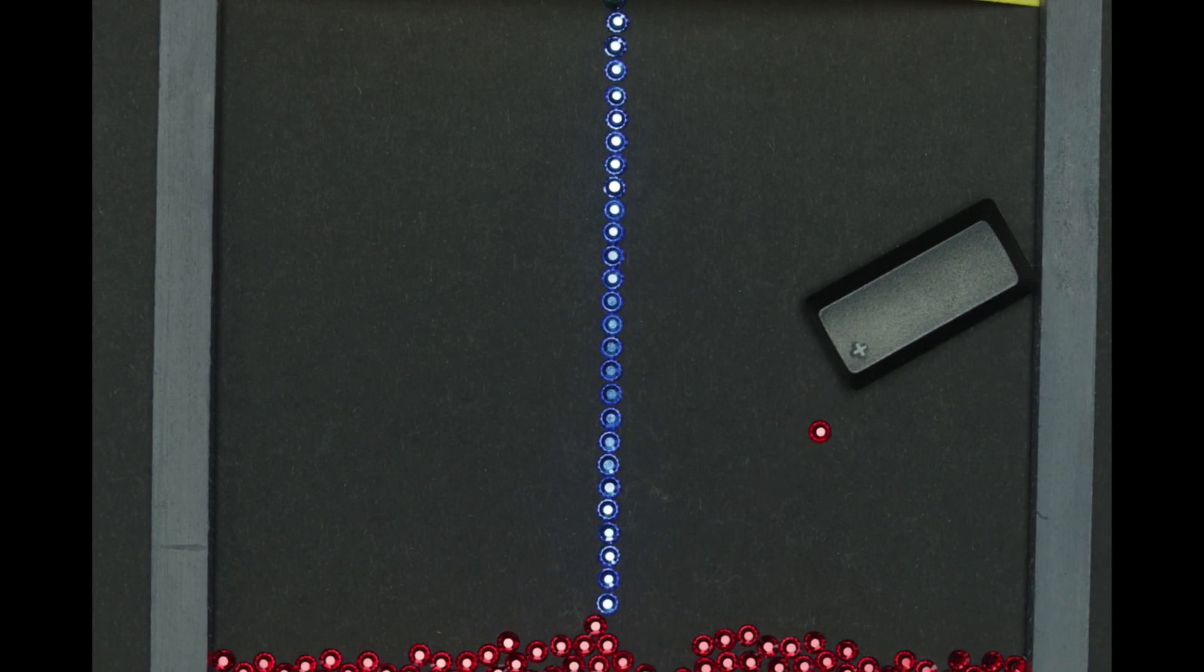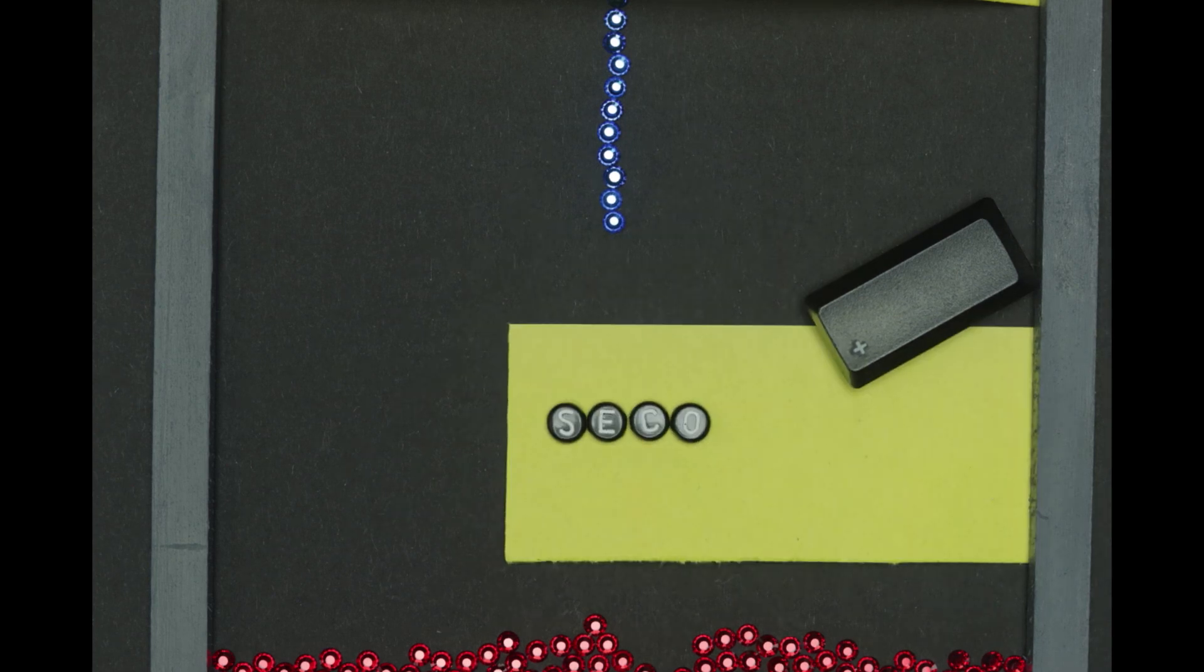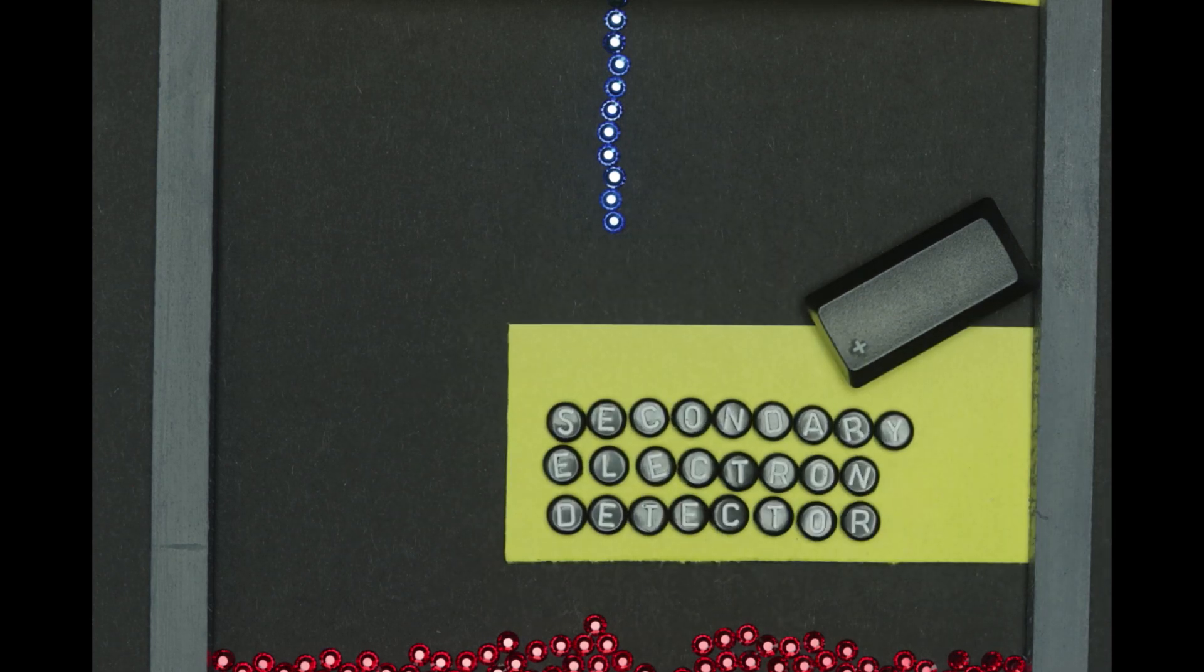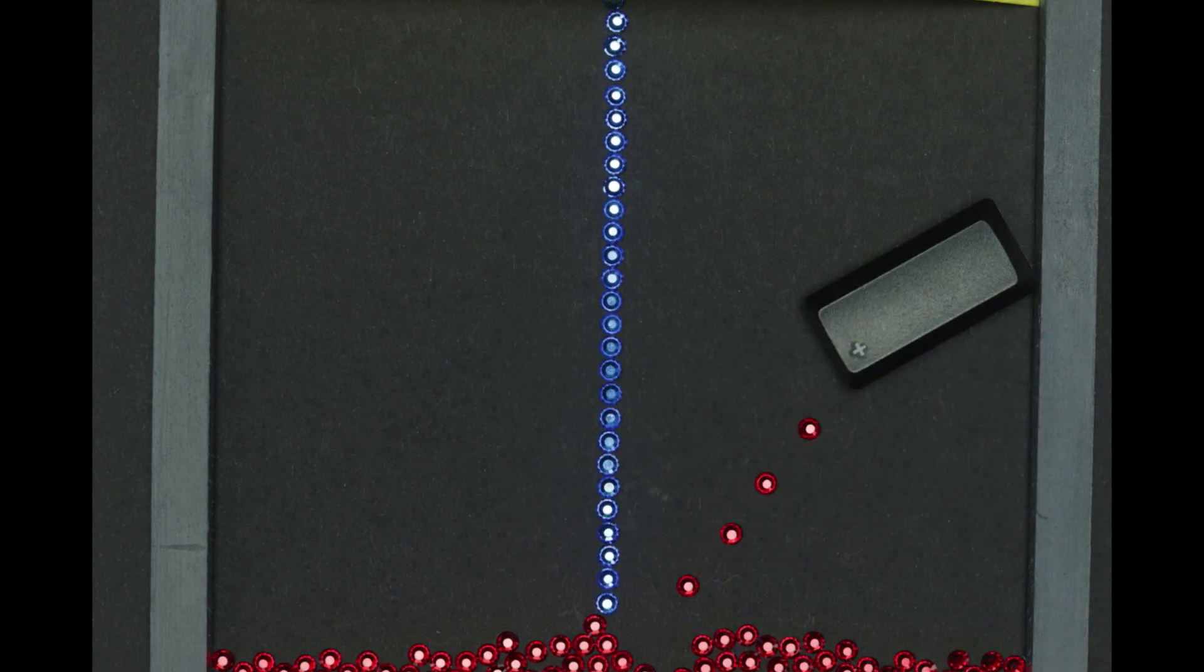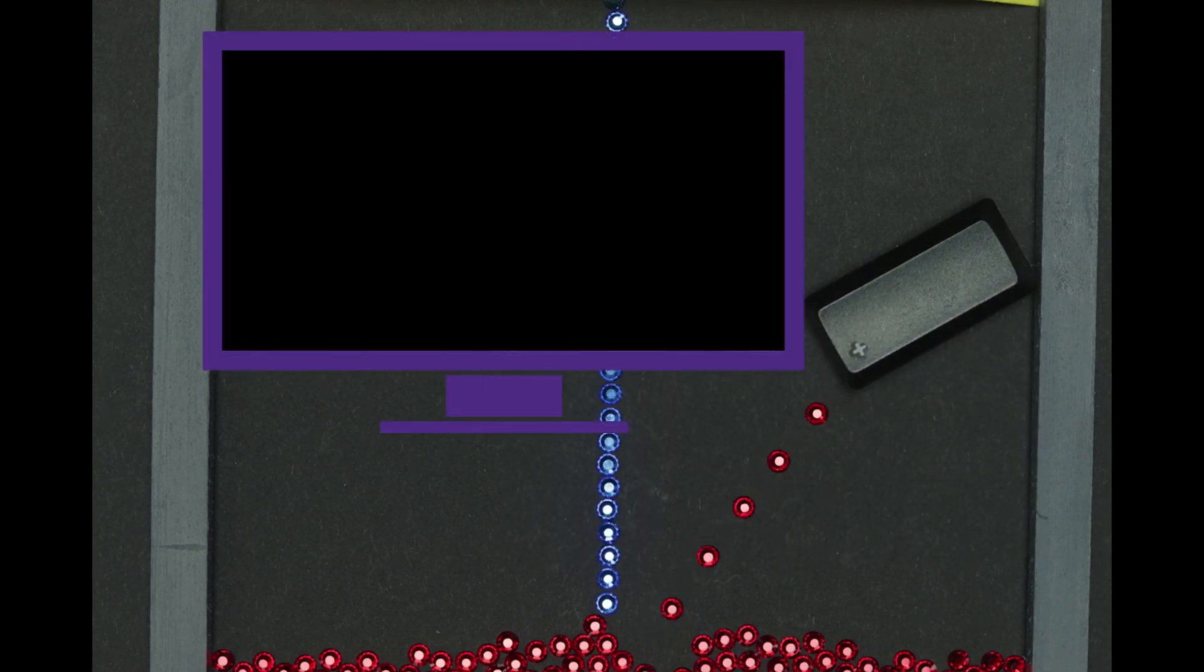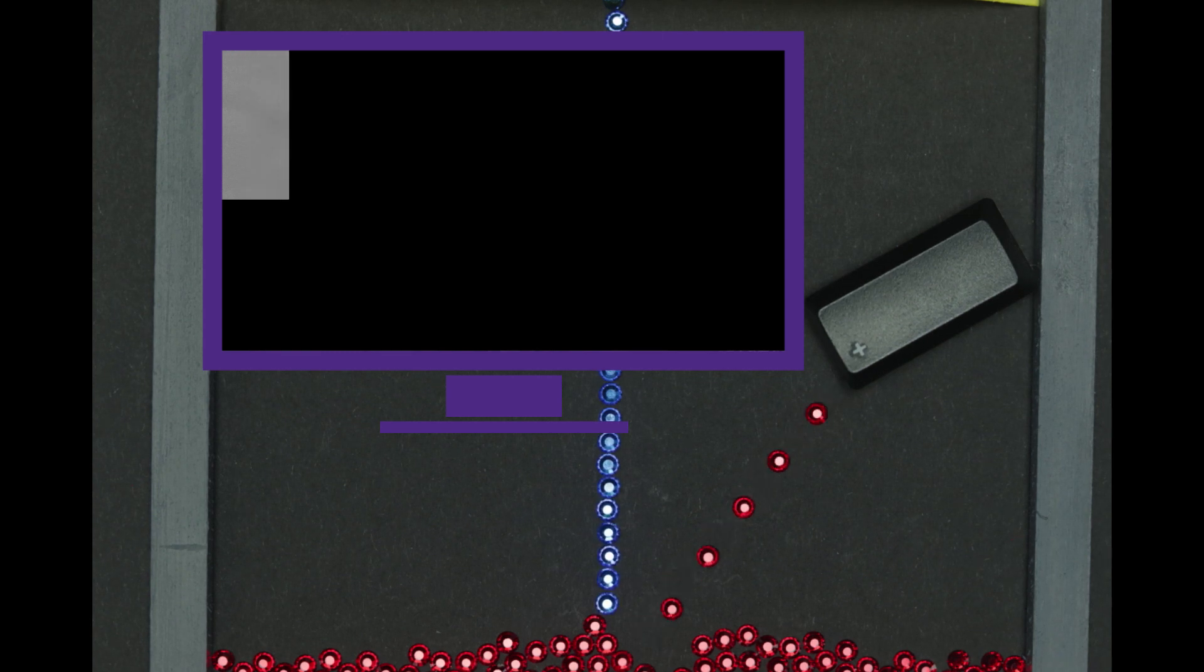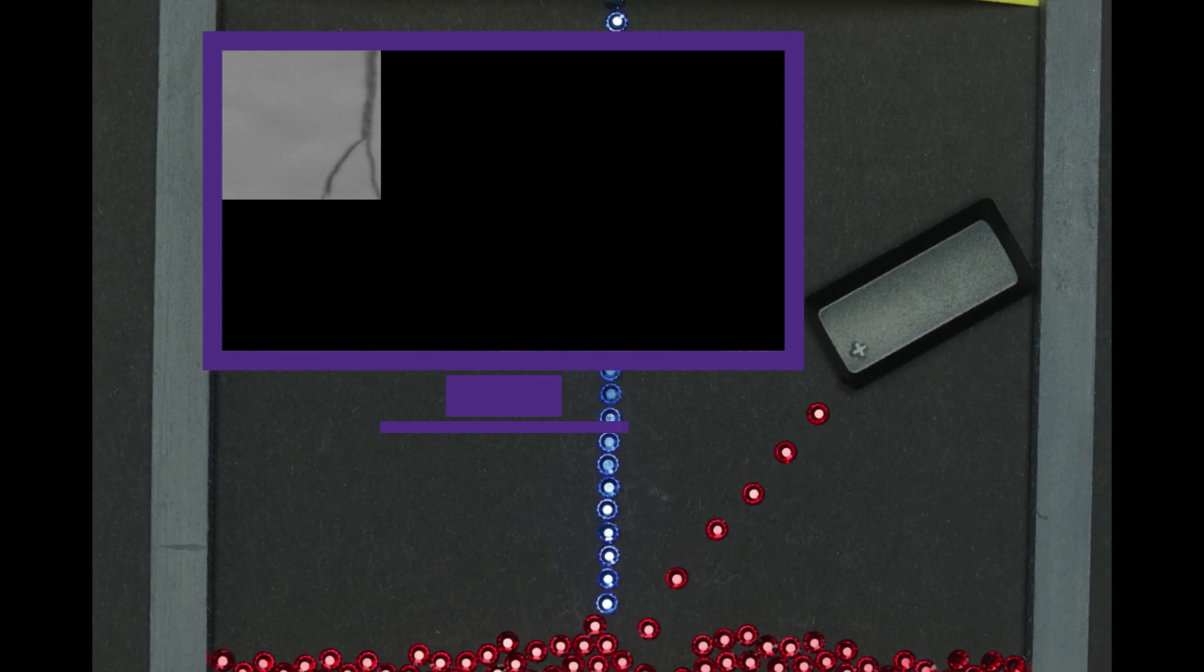The electrons that leave the sample are called secondary electrons. A special secondary electron detector inside the vacuum chamber has a positive charge which attracts the secondary electrons and transfers them into the computer. The computer produces the image one pixel at a time as it scans across the sample surface.